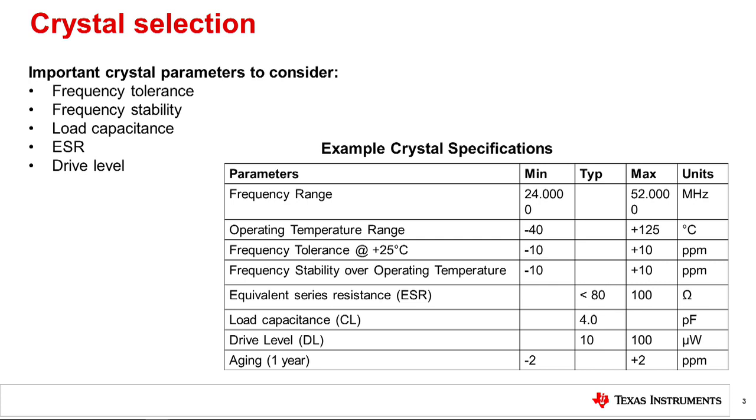A crystal with a frequency tolerance of ±50 ppm, a stability spec of ±25 ppm over 40 degrees Celsius to 85 degrees Celsius, and an aging spec of 5 ppm per year would have a total accuracy of ±80 ppm and easily meets the IEEE requirement.